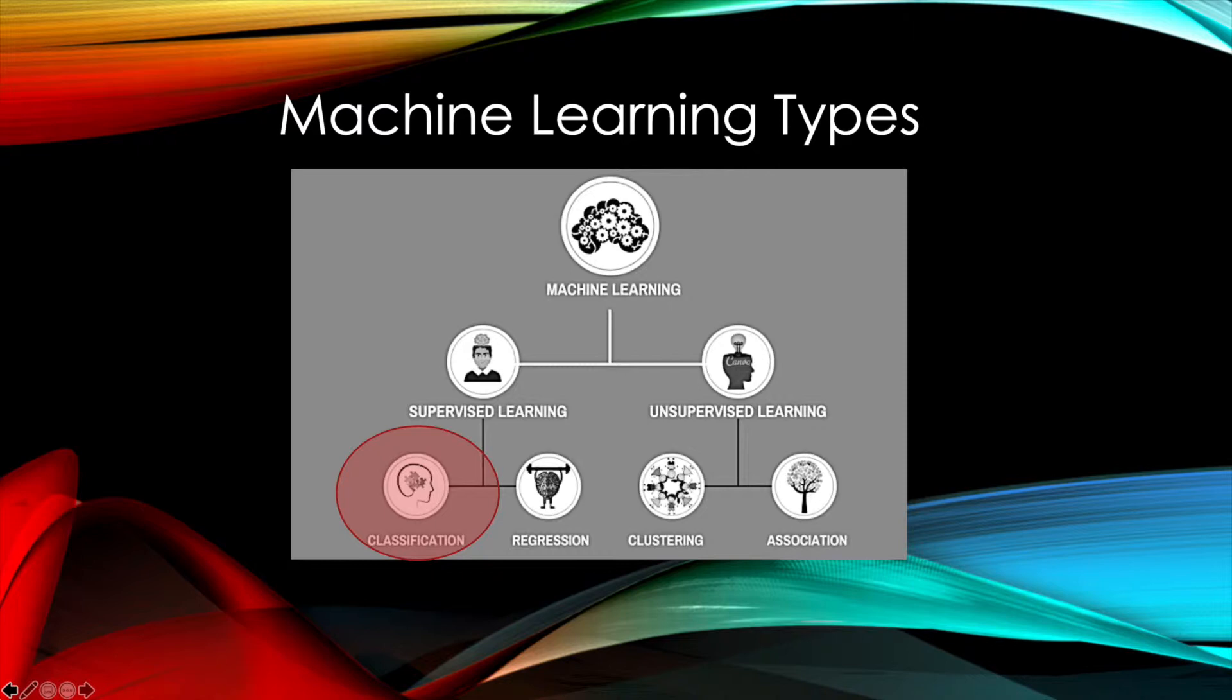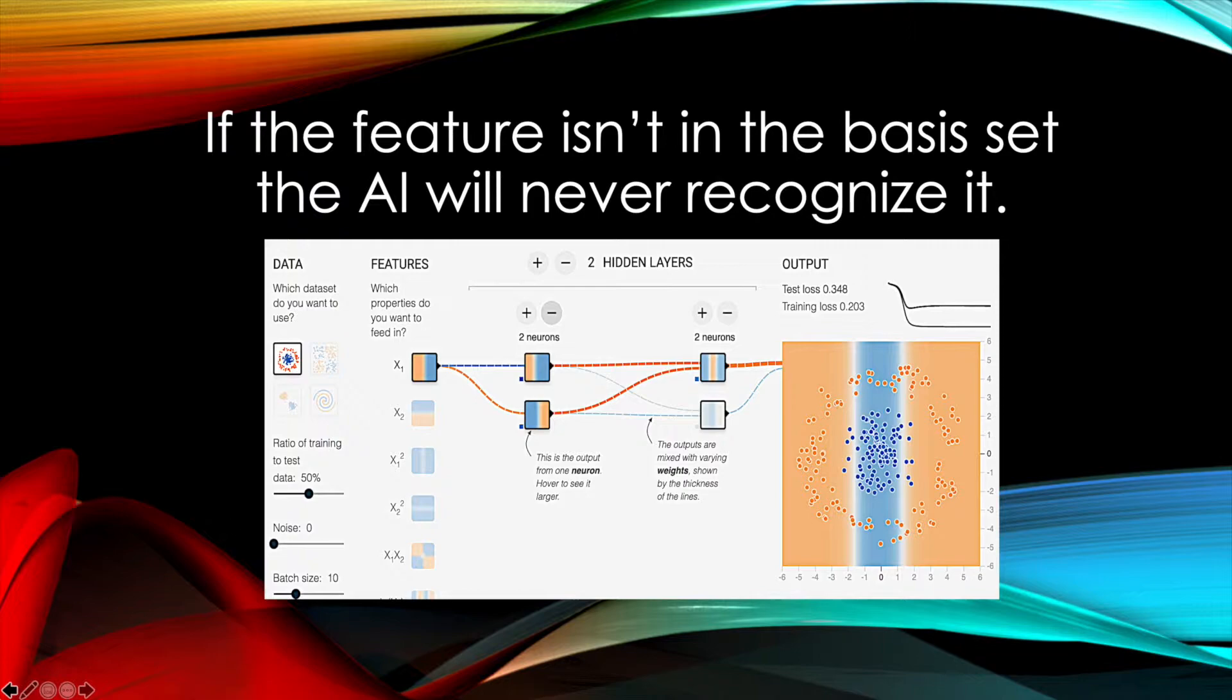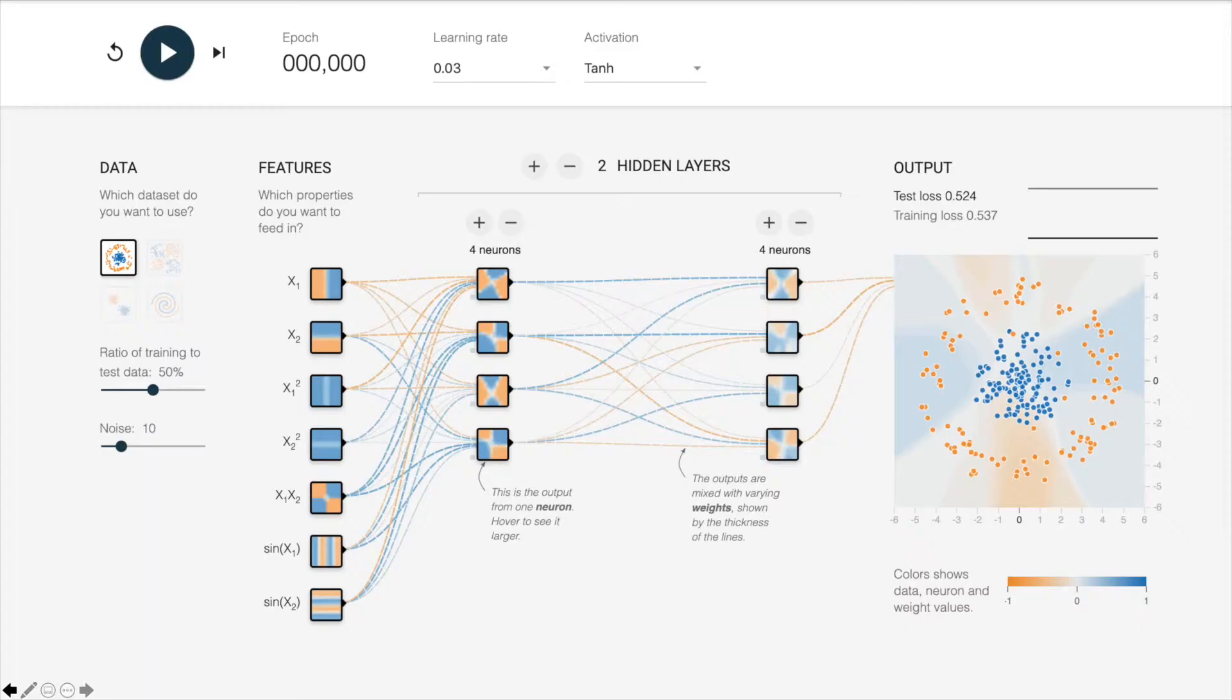Here are the basis functions we might use for drawing a person. We could use lines to draw the person. We could use triangles. We could use circles of one color but different sizes, or we could use colored circles. As we enrich our basis function set, we're more likely to not only be able to draw a person more accurately, but most importantly in machine learning, we're going to be able to recognize a person more comprehensively. So as I said all along, if the feature isn't in the basis set, the AI will never recognize it.